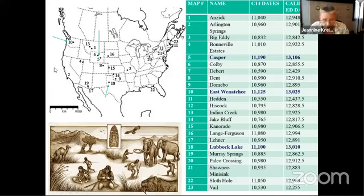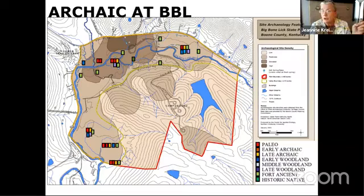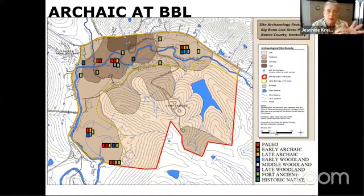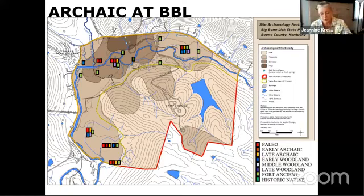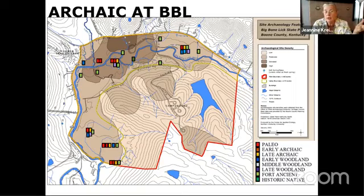Moving to the next time period: the Paleo people — Clovis, whoever they are — spread out across the United States, settling into different regions along rivers and streams. Technology was changing, and the large mammals were gone — likely a combination of climate change as glaciers retreated and native tribes hunting them. The large spear points, five or six inches long, were too big for deer, so they switched to making smaller points. This brings us to the Archaic time period, divided into Early, Middle, and Late.